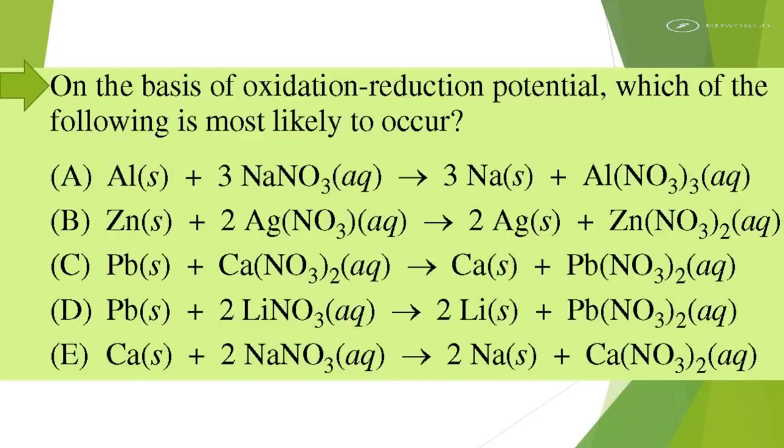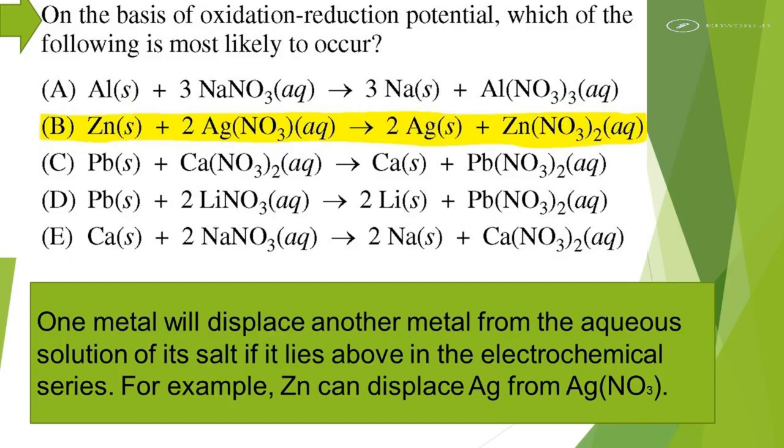On the basis of oxidation reduction potential, which of the following is most likely to occur? One metal will displace another metal from the aqueous solution of its salt if it lies above in the electrochemical series. For example, zinc can displace silver from silver nitrate.